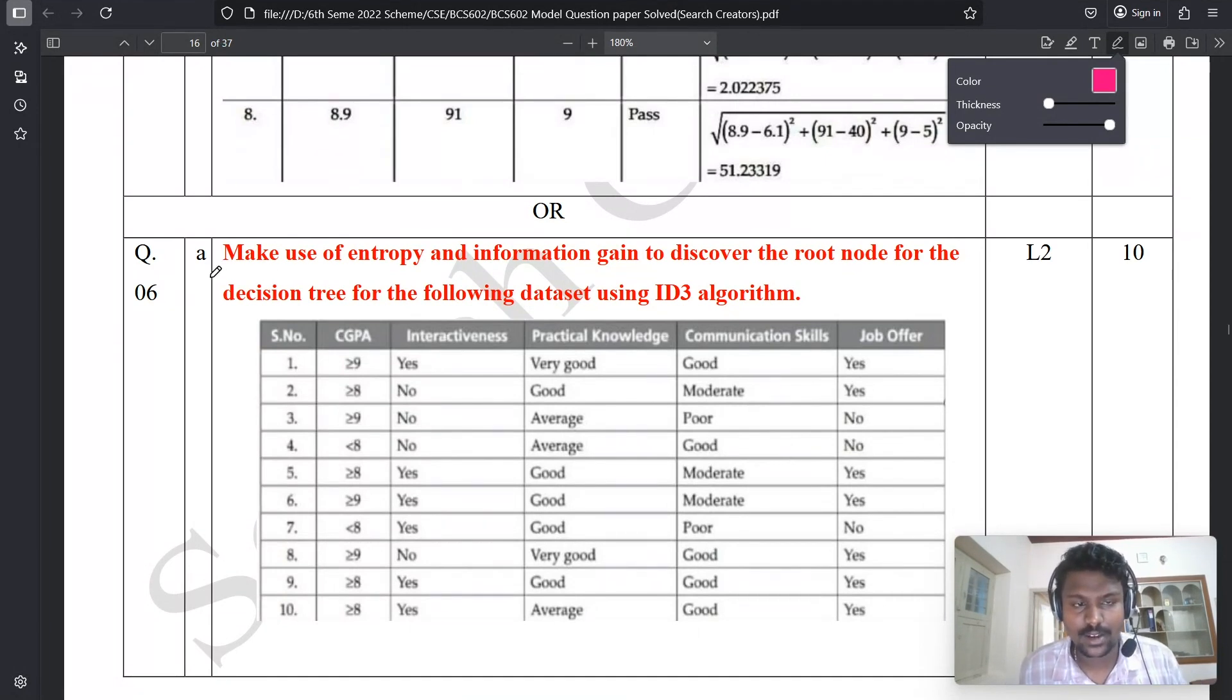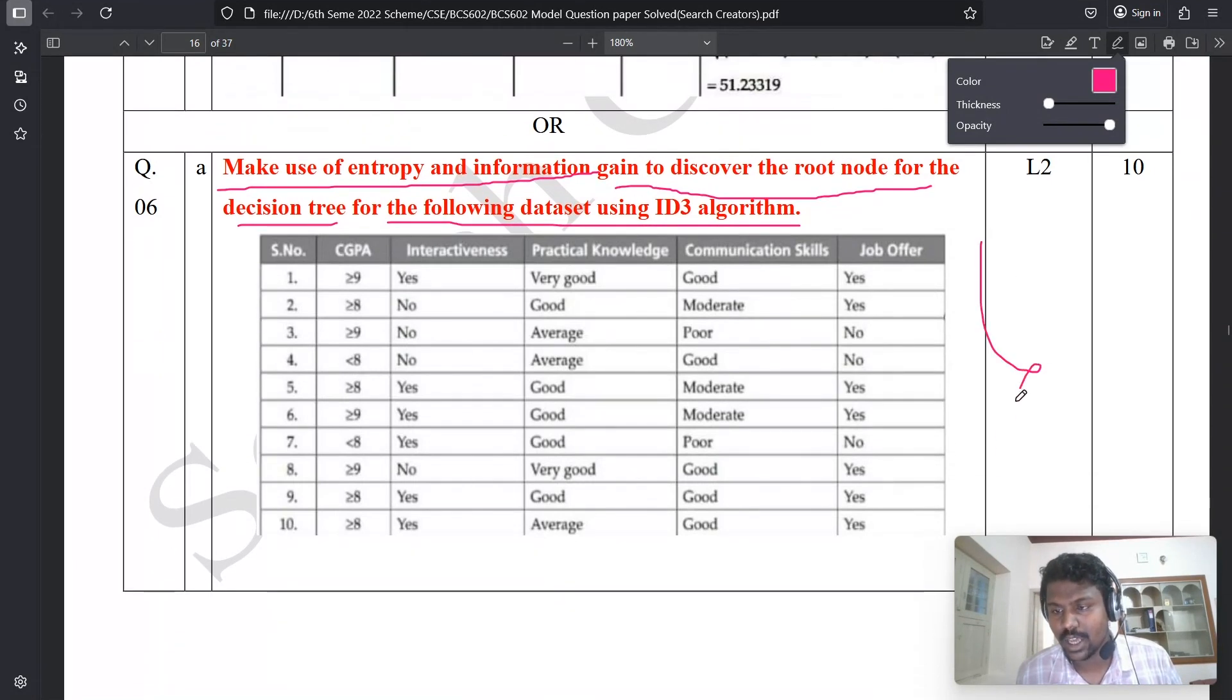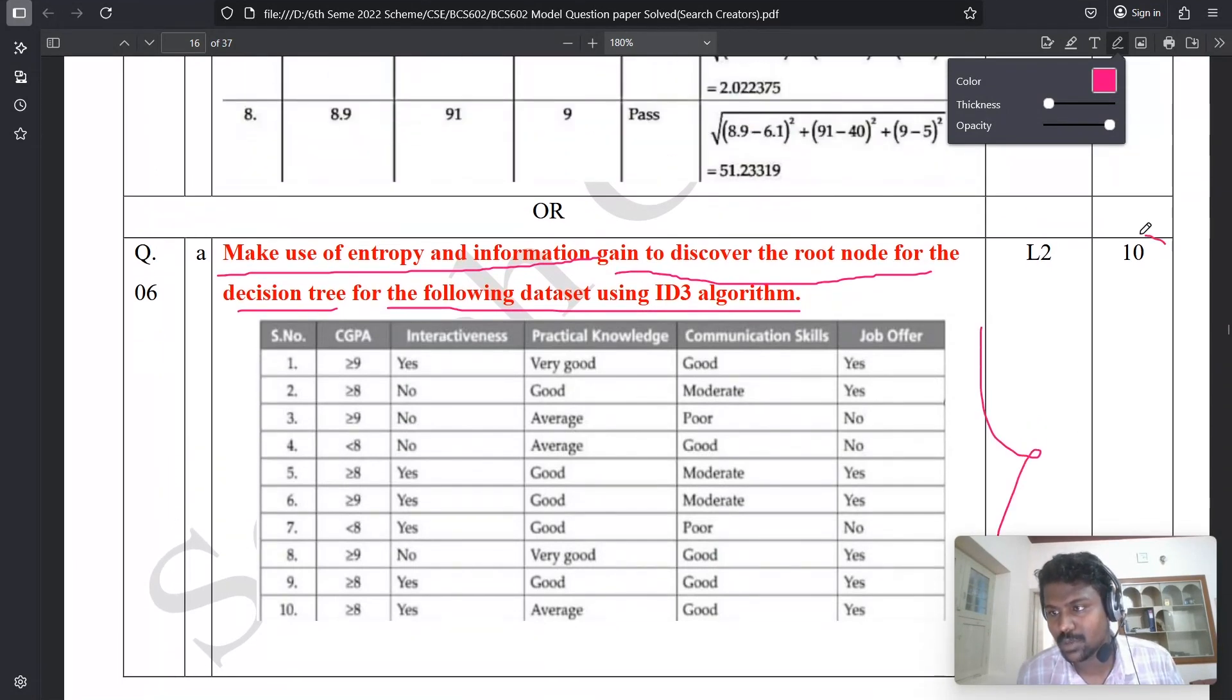We're going to understand question 6a in Model 3. The question is: Make use of entropy and information gain to discover the root node for the decision tree for the following dataset using ID3 algorithm. This is the dataset given, and the allocated marks is 10 marks because it is a problem question.